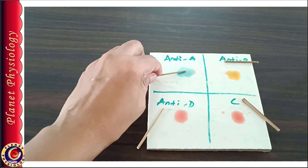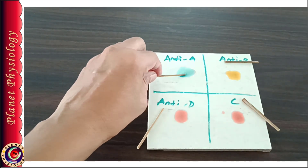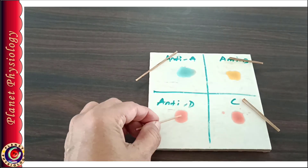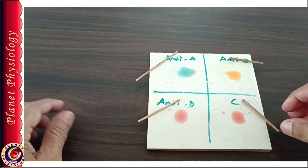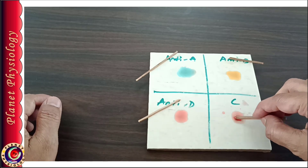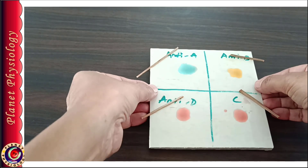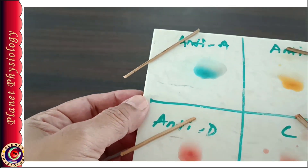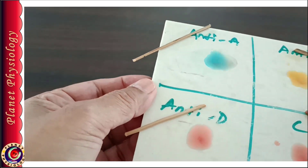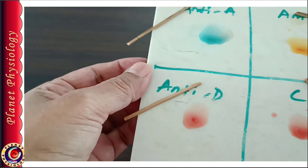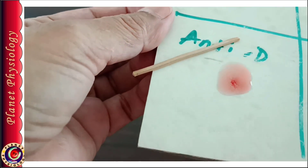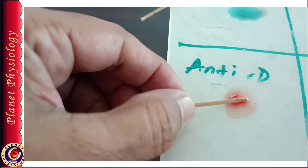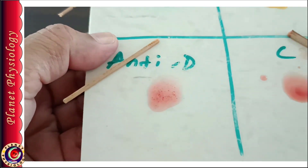Wait for a minute and then mix the contents again with the same sticks. Observe for agglutination reaction. If you can see clumps of RBCs in any anti-serum, note it down; otherwise wait 1 more minute, then mix again and look for agglutination. You can also gently rotate the tile. Usually the antigen-antibody reaction completes in about 2 to 6 minutes. In this case, the contents of anti-A and anti-B are looking homogeneous, while you can clearly see clumps of RBCs in anti-D — clumping is due to agglutination reaction. There is no agglutination in control, indicating the experiment was performed with proper precautions. Control also helps to differentiate clumping of RBCs from settling of RBCs.